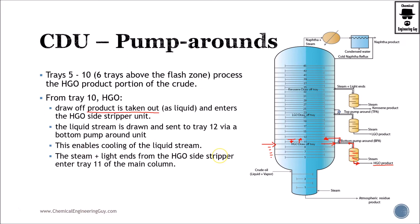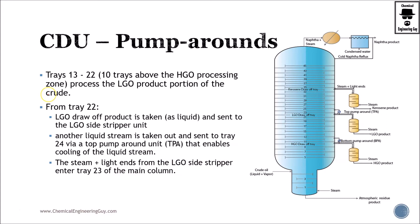This enables cooling. I just want to make clear this specific part right here. We have a temperature of tray number 10, and after further heating, we're going to have a high temperature reflux. So this reflux is higher in temperature than tray 11 or 12. Therefore, this will drop and heat down. This enables cooling of the liquid streams. The stream and light ends from the HGO stripper will enter through here.